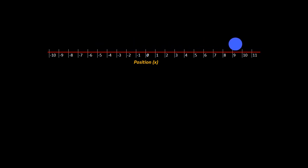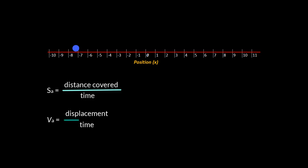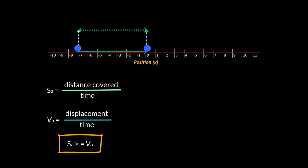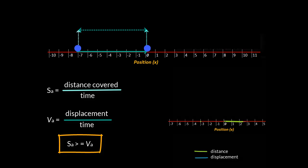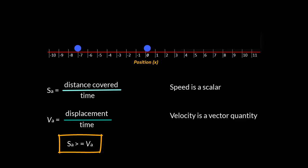That brings us to average speed, another way of describing how fast a particle is moving. The formula is S average equals total distance travelled divided by time. The difference from average velocity is that while average velocity uses displacement, average speed uses total distance travelled. Therefore, average speed is never less than the magnitude of average velocity, because distance covered is always equal to or greater than displacement. Also, velocity is a vector quantity while speed is a scalar quantity — it has magnitude only and no direction.